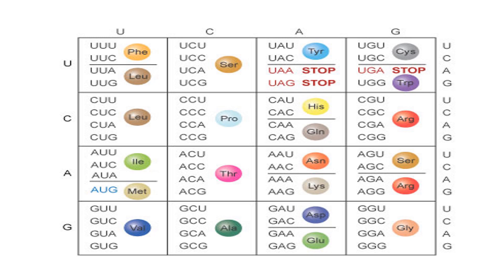Let's look at the codons — triplets. For example, UUU codes for phenylalanine. If in your mRNA sequence you have AAA, then in your translation sequence that will call for UUU, because AAA on the mRNA corresponds with UUU on the tRNA anticodon, and that amino acid will be phenylalanine.